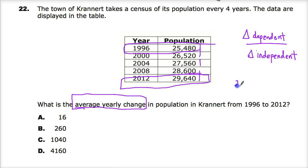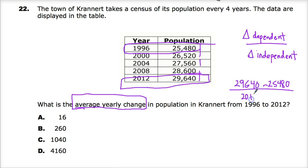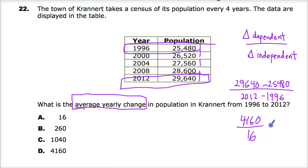In order to find the change, I just do simple subtraction — this is a calculator section, it doesn't matter that much. And then I need to do the change in the independent, so how far apart those times are: 2012 minus 1996. So here I end up with 4,160 for the population change. The change in years is just 16. And then when I do my final division, I get 260 as the average yearly change between one year and the other.